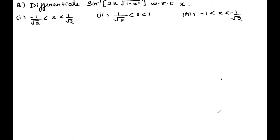Now let's look at interval-based differentiation. When an interval is given, the angle may or may not lie in the principal value branch. We will differentiate y = sin⁻¹(2x√(1−x²)) across three intervals and see how the answers vary.